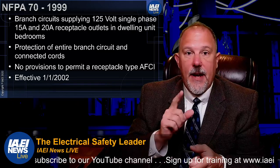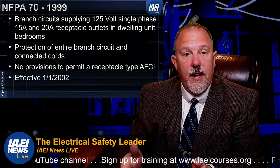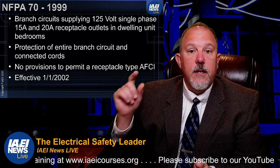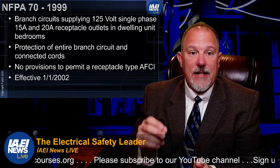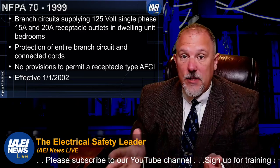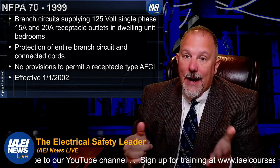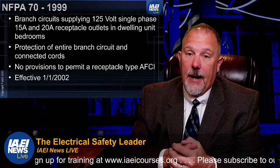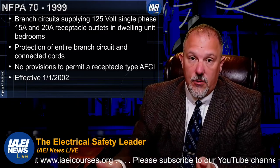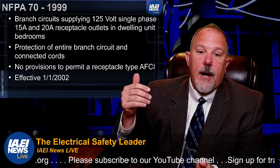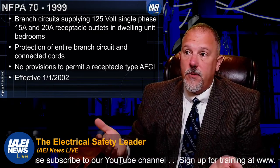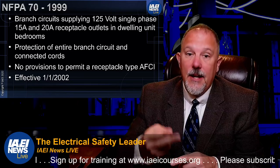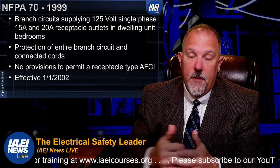AFCIs were introduced in NFPA 70 in 1999 to protect branch circuits supplying 125-volt, single-phase, 15- to 20-amp receptacle outlets in dwelling unit bedrooms, with an effective date of January 1st, 2002. That delay was given because only two manufacturers were on the market with an AFCI product — both making branch feeder type devices — and the industry needed more time to bring solutions.